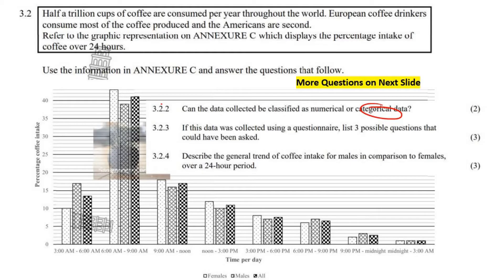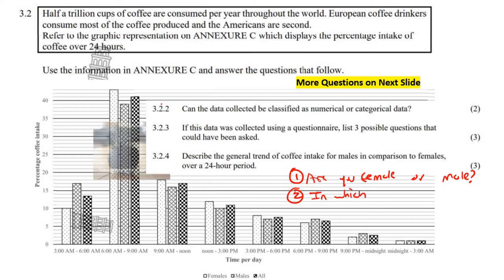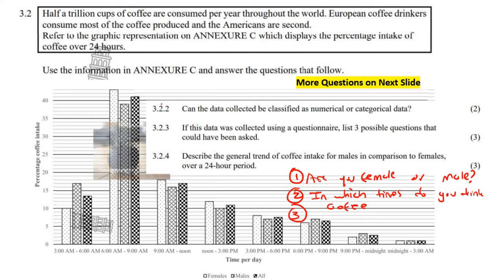If this data was collected using a questionnaire, list three possible questions that could have been asked. Say it's a questionnaire that you leave somewhere and people can pick it up and answer it themselves. First, you could ask: are you female or male? The next thing you could ask is: in which time slots do you drink coffee? — and give them checkboxes to choose from. And you could also ask: do you drink coffee? — probably right at the beginning.